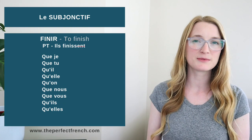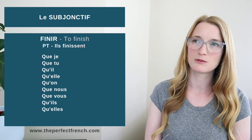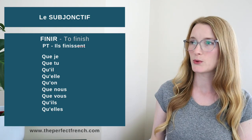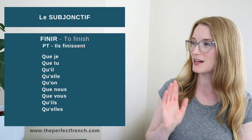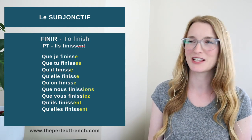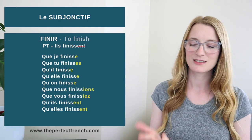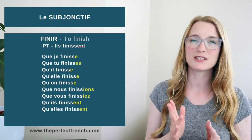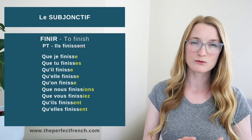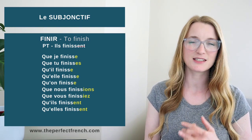For the verbs ending in -ir, if we take finir, conjugated in the present tense with ils finissent, we remove the -ent, we add the stem everywhere and we add the endings. So: que je finisse, que tu finisses, qu'il finisse, qu'elle finisse, qu'on finisse, que nous finissions, que vous finissiez, qu'ils finissent, qu'elles finissent.